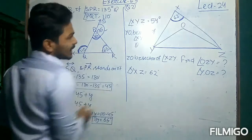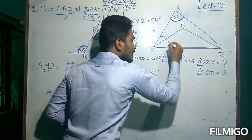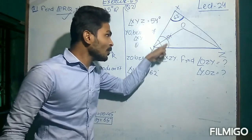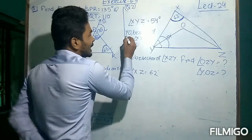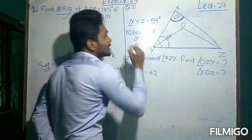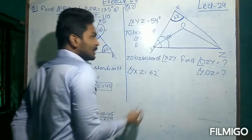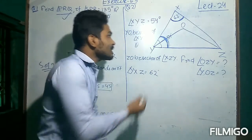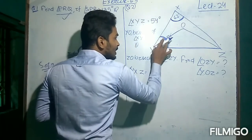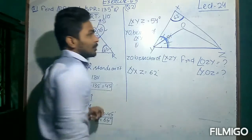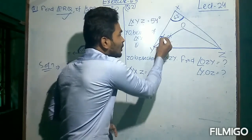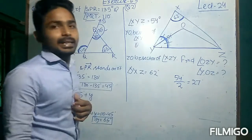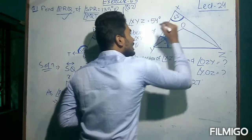We don't know the individual sub-angles separately; we only know the total angle XYZ is 54 degrees. It is given that YO is the bisector of angle XYZ. An angle bisector is a line which divides an angle into two equal halves. So since the total angle is 54 degrees, each half will be 27 degrees. This angle is 27 degrees and this angle is also 27 degrees.